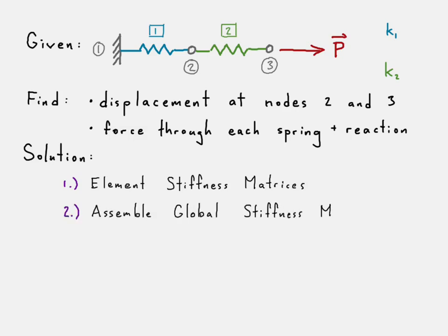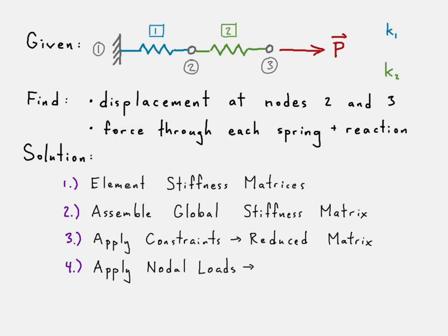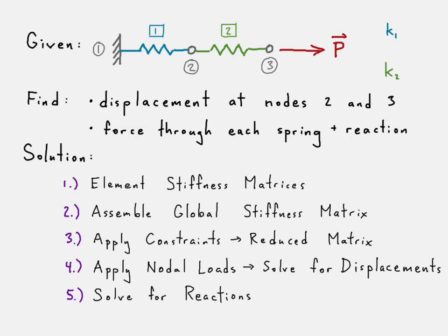Once those are formulated, we use them to assemble the global stiffness matrix for the entire structure. Once that's formed, we apply constraints, which gives us our reduced stiffness matrix equation. Once that's known, we apply the nodal loads — in this case, just P at node three. Then we solve for the unknown displacements. Once those are known, we can solve for the reactions, and also use them to solve for our elemental results — in this case, the forces going through each of those elements.